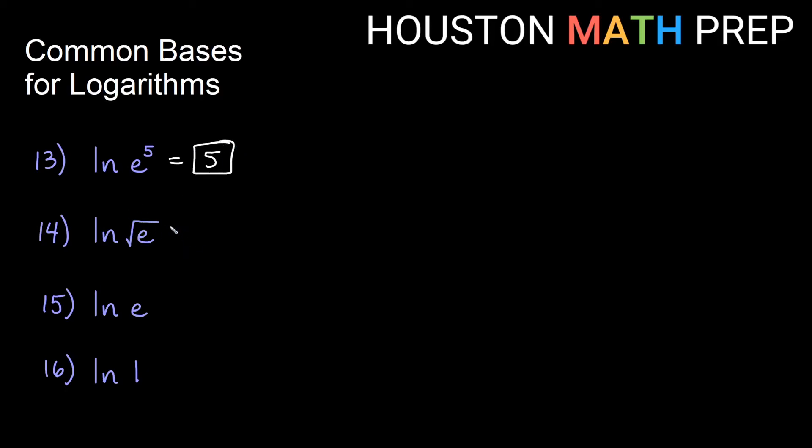This one a little bit more complicated. We need to know what power a square root is. Ln of square root e is asking us what power of e is square root of e. And the answer is the square root of e is the one half power of e.